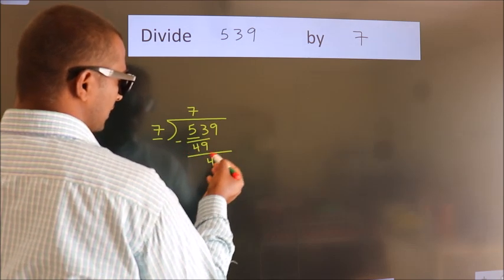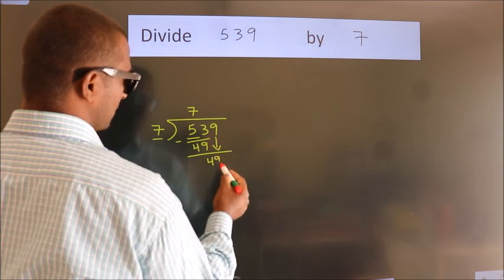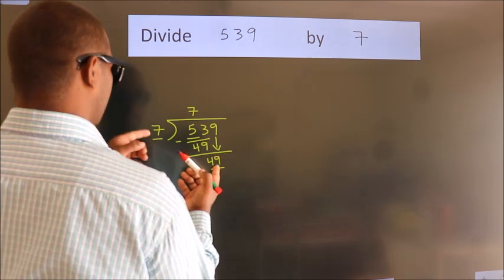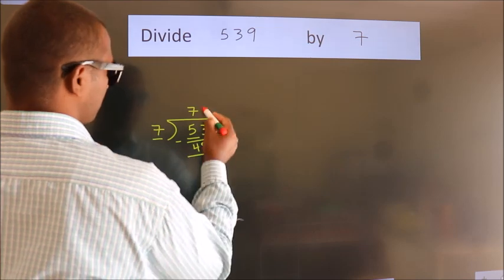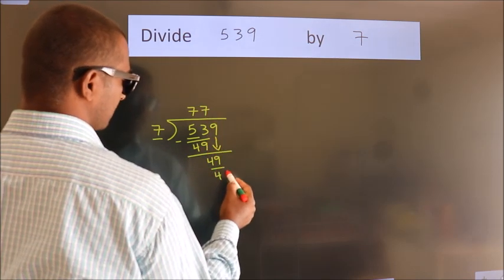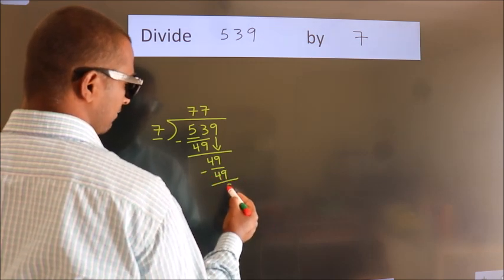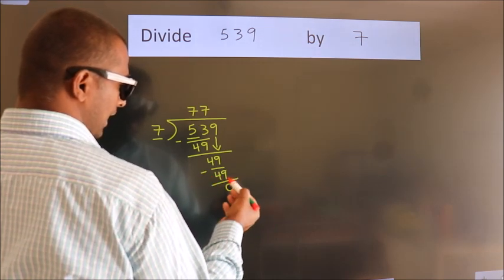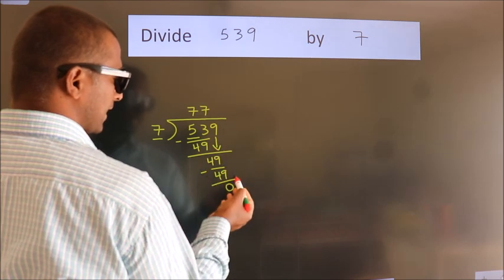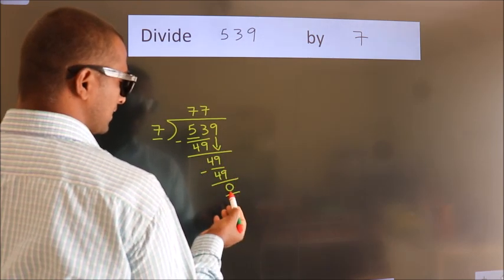After this, bring down the beside number. So, 9 comes down, giving us 49. When do we get 49? In the 7 times table: 7 sevens are 49. Now we should subtract. We get 0. After this, there are no more numbers to bring down, and we got remainder 0.